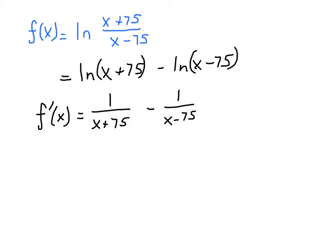It's written as a difference here, but we can also write this as a rational function if we just subtract these two fractions. So to subtract fractions, you need a common denominator. And our common denominator will be whatever x plus 75 times x minus 75 happens to be.